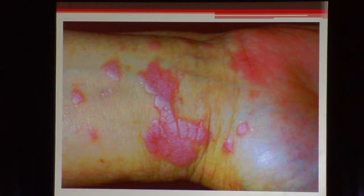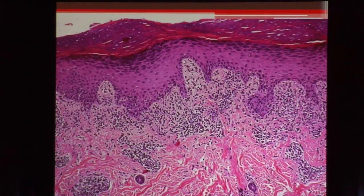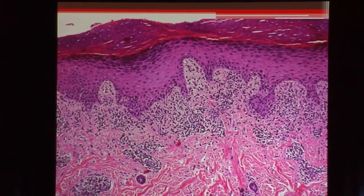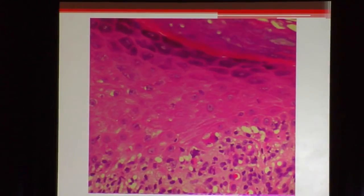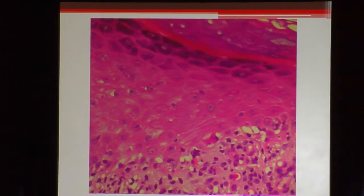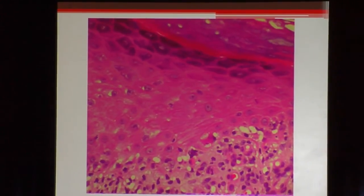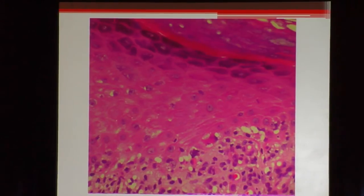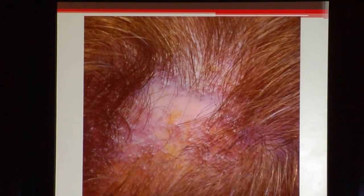Under the microscope in lichen planus, all the lymphocytes line up along the border of the dermis and epidermis — that is a lichenoid or interface dermatitis. Sometimes you can't even tell where the epidermis stops and the dermis begins. When the inflammation abuts right up to the epidermis, you can get squamous cells dying — necrotic keratinocytes — which is very characteristic for lichen planus, though you can also see this in drug reactions. For lichen planopilaris, if you biopsy intralesional, all you see is scar — not helpful.